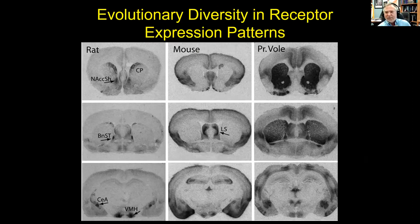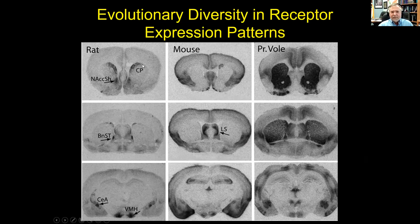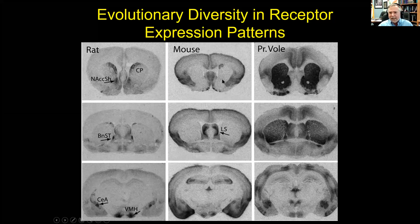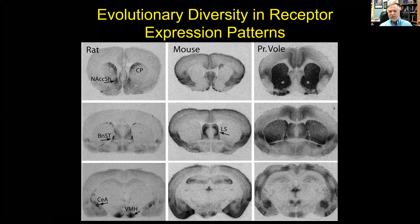One of the coolest things about the oxytocin receptor system is that, while steroid receptors are very highly conserved in their expression from fish to reptiles to mammals to humans, even among rodents you see very robust species differences in receptor distribution. In the mouse, there's virtually no receptor binding in the nucleus accumbens. Something fundamental about the oxytocin receptor gene gives it evolutionary plasticity so that it can move around across species, generating diversity in social behaviors.